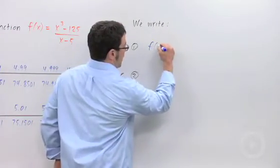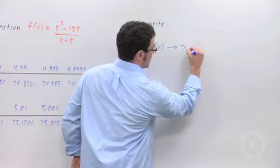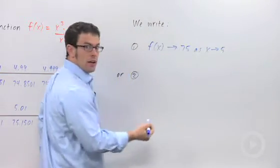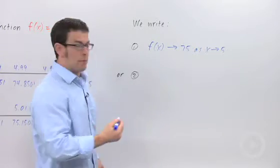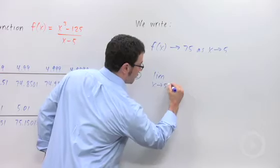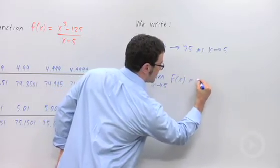So here's what we say. We say that f of x approaches 75 as x approaches 5. Or, another way to write this, and this is the way we'll more commonly express it, the limit as x approaches 5 of f of x is 75.